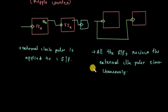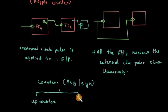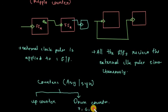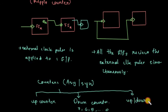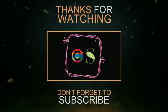Now let's discuss types of counters. Both asynchronous and synchronous counters can be divided into: an up counter, which counts upward 1, 2, 3; a down counter, which counts downward 7, 6, 5, 0; and an up/down counter, which is a combination of both.